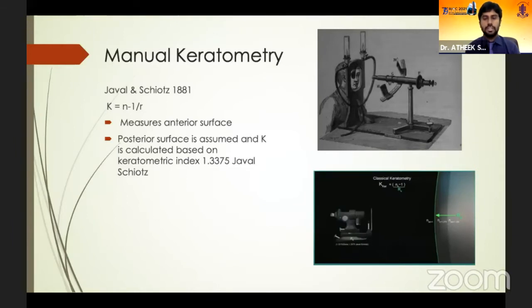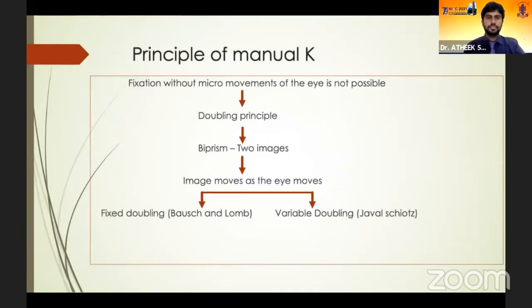Javal and Schiotz came out with the more practically usable keratometer in 1881, and this principle holds good even now — even the Bausch and Lomb keratometer uses a similar principle. In this keratometer, the anterior corneal surface is measured and the posterior surface is presumed, calculated based on a keratometric index. It works on the principle of fixed doubling, using a biprism to negate micro-movements in the eye.